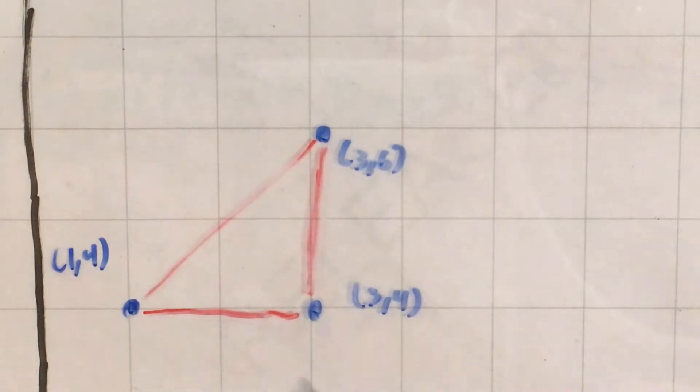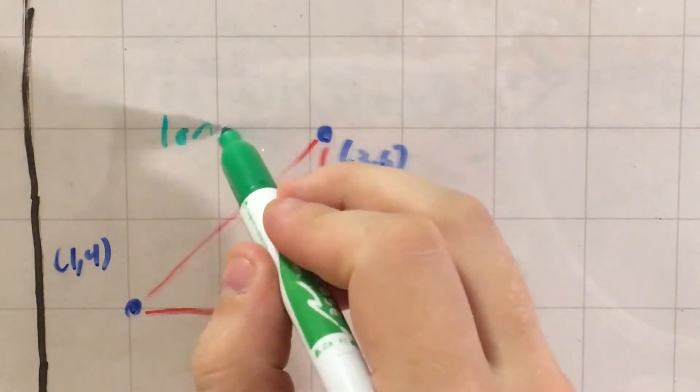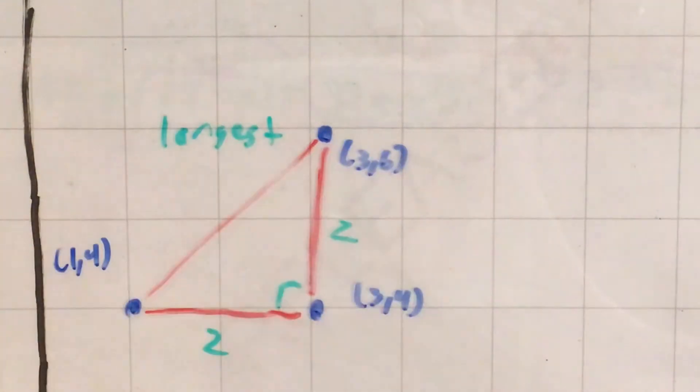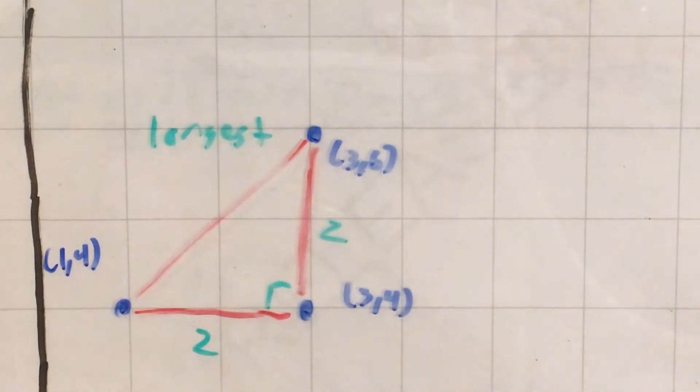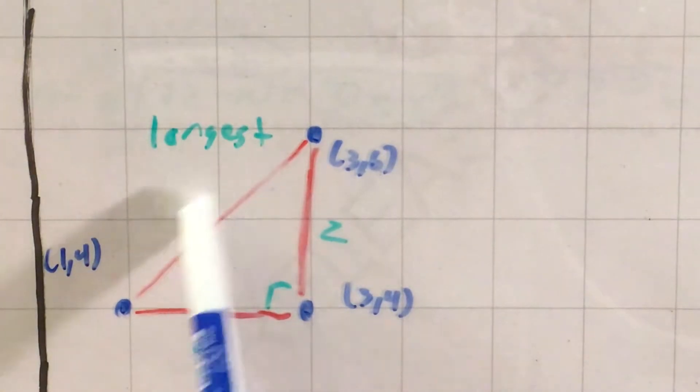And now, if I'm looking for my longest side, then I can kind of count here. That's 2, that's 2. Well, if this one's horizontal and this one's vertical, that makes a right triangle, and this would have to be the hypotenuse, so this one is the longest. Notice I didn't use any math to figure that out, besides just remembering my knowledge of right triangles, and remembering that the hypotenuse is always the longest side.